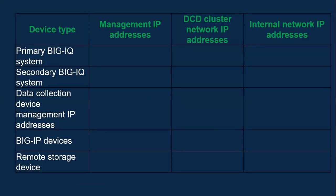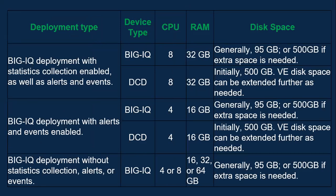Now thinking about the deployment type — if you are deploying BigIQ with statistics, alerts, and events enabled, the BigIQ CPU requirement would be 8 vCPU and RAM 32 GB. Generally, disk space should be 95 GB, but if you have sufficient space, you can set it to 500 GB. For DCDs, the CPU requirement is 8 vCPU and RAM 32 GB, and initially DCDs require 500 GB of disk space.